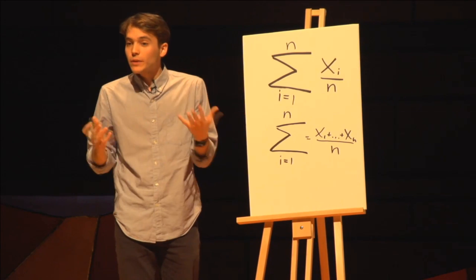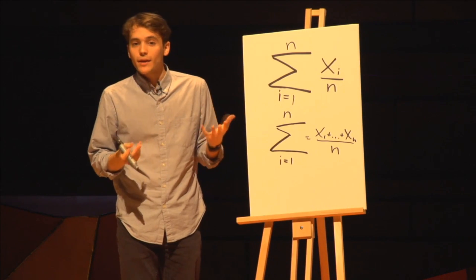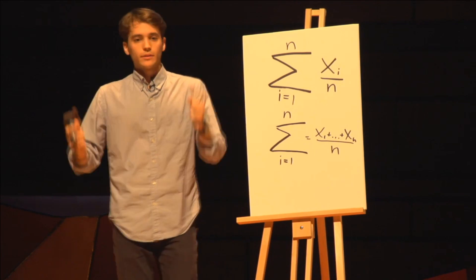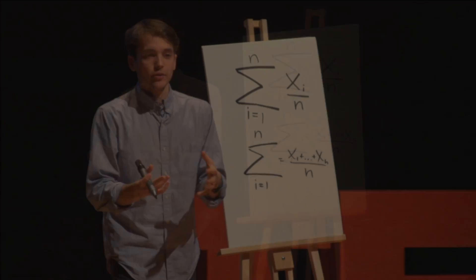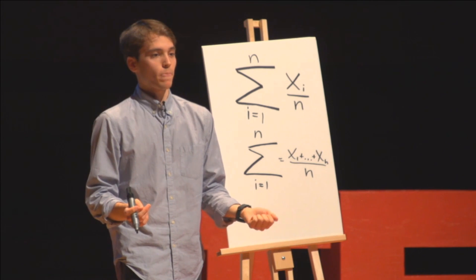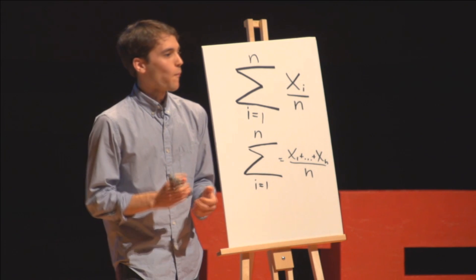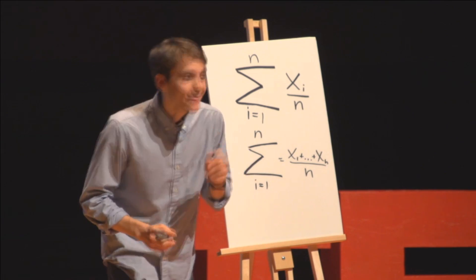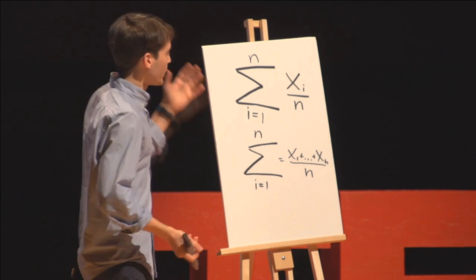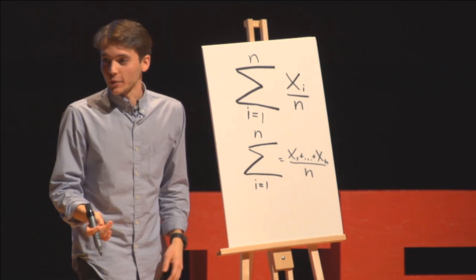In other words, this is a really, really complicated, fancy math way of saying a simple procedure. Take all of your values, add them together, and divide by the number of values you have. What do we call this type of procedure? Average. This is the calculated average, something I'm sure you're all very familiar with.